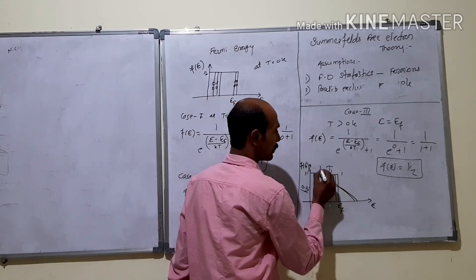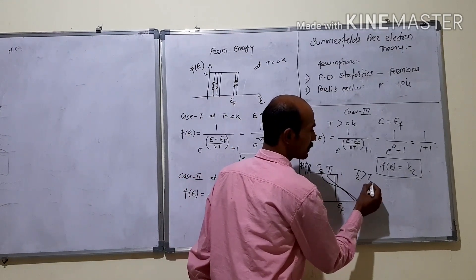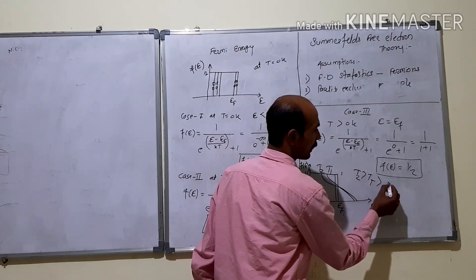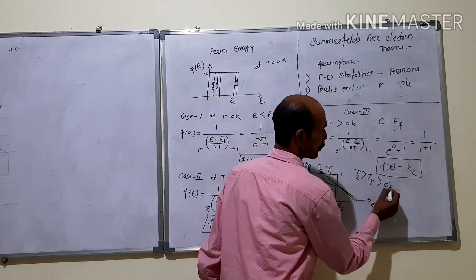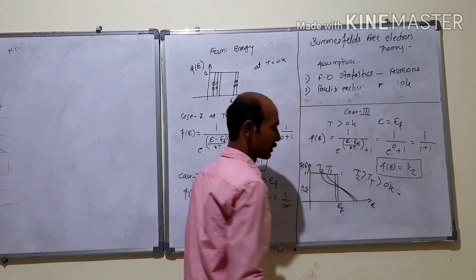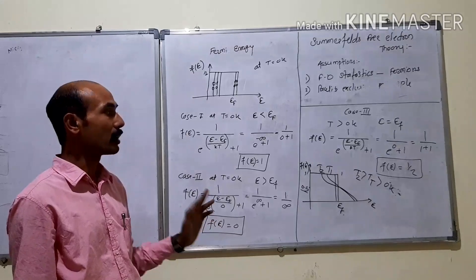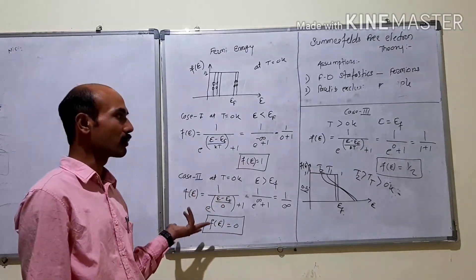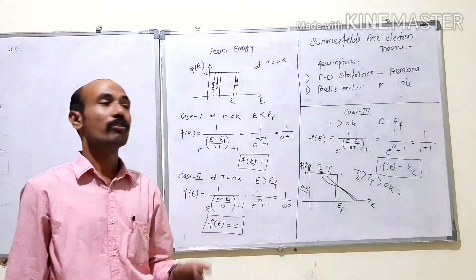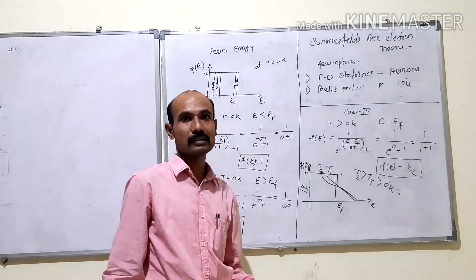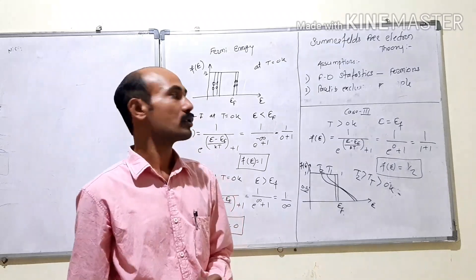The graph shows temperatures T1 and T2, where T2 > T1 > 0 K, illustrating how the distribution broadens around EF. This covers the Fermi energy and the Fermi-Dirac distribution function at T = 0 K and higher temperatures. In the next lecture, we will see about density of states and band theory. Thank you.